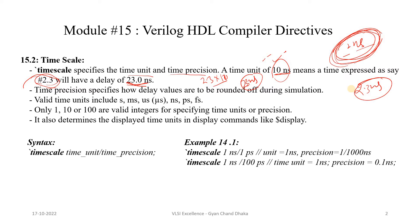The valid time units can be seconds, milliseconds, microseconds, nanoseconds, picoseconds, or femtoseconds. The valid integer values used to specify time units or precision can only be 1, 10, 100, 1000, and so on. The timescale directive is also used by system tasks like $display to get the time at a particular instance and print its value.